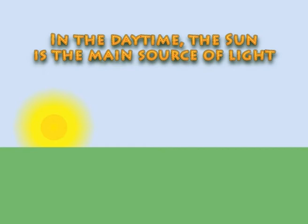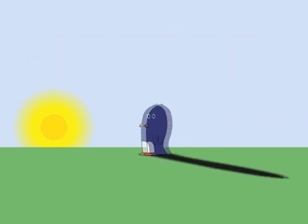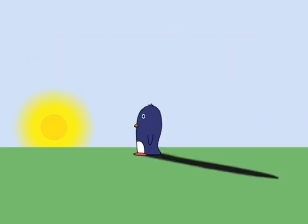In the daytime, the sun is the main source of light. A shadow from the sun changes over the course of a day. At sunrise, when the sun appears low in the sky, the shadow is long.